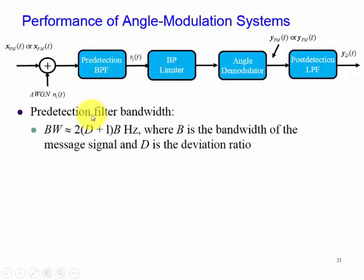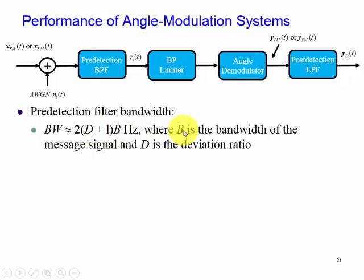Now that we have the pre-production filter described here and its function, let's look at the bandwidth. The bandwidth is described by Carson's rule — the generalized Carson's rule — where the bandwidth of the received signal is governed by 2 multiplied by the quantity of D plus 1, multiplied by B, where B is the bandwidth of the message signal and D is the deviation ratio, which is the ratio of maximum change in the frequency of the carrier divided by the highest frequency of the message signal.